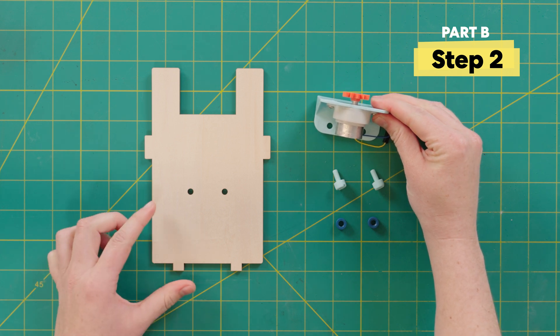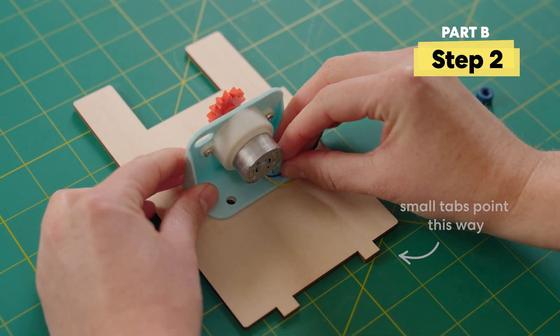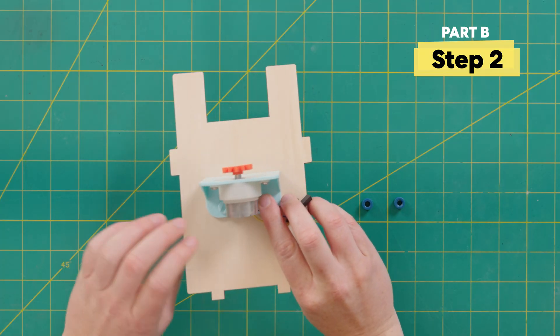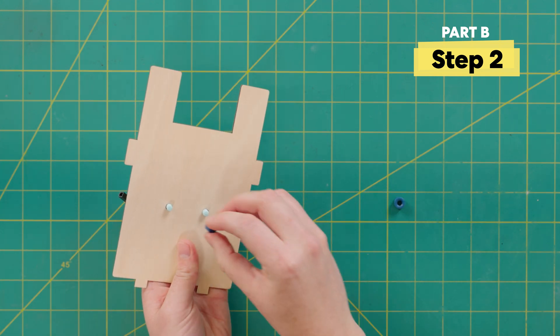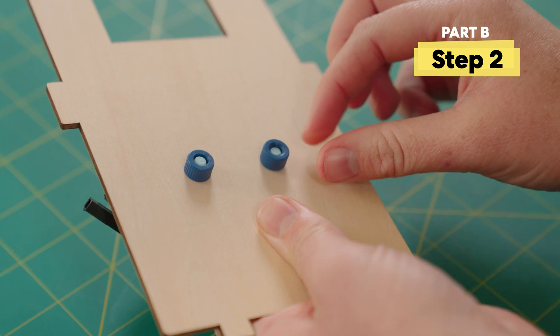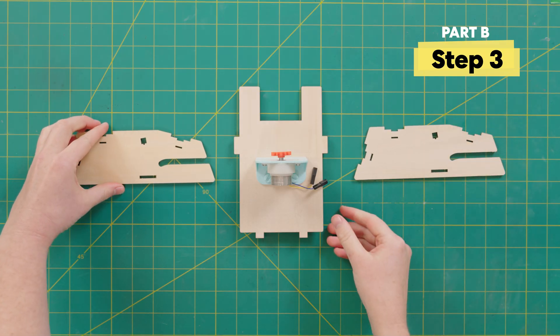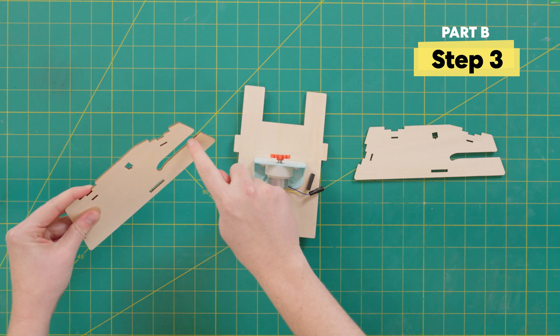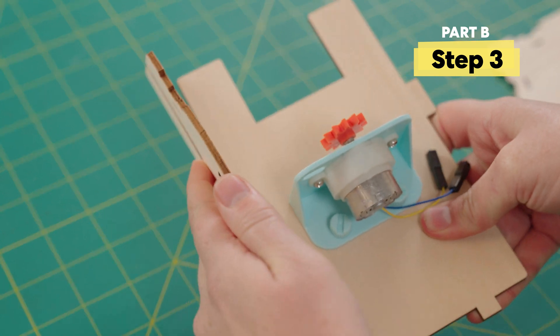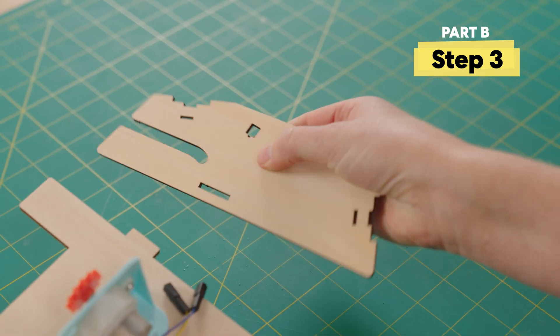Now we're going to connect the motor onto this wooden base. First, we'll place it on top and then poke two screws through the holes. Next, we're going to flip it over and screw on two nuts on the back. Now we're going to grab two of these wooden pieces and attach one with the long cutout facing this direction through this slot here. And then doing the same on the other side with that slot facing forward.